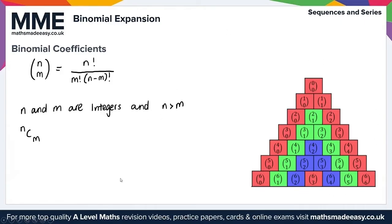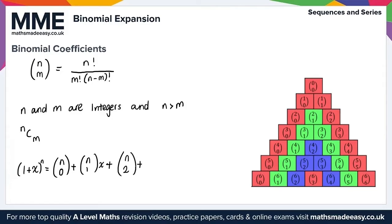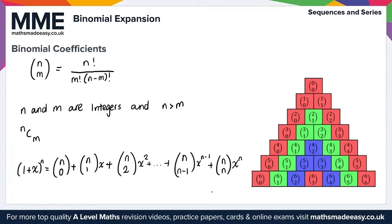We can write the expansion of (1+x) to the power of n in full using binomial coefficients. This equals n choose 0, plus n choose 1 times x, plus n choose 2 times x squared, and this carries on to n choose (n minus 1) times x to the (n minus 1), and finally plus n choose n times x to the n. That's what we use for our expansion of (1+x) to the power of n.